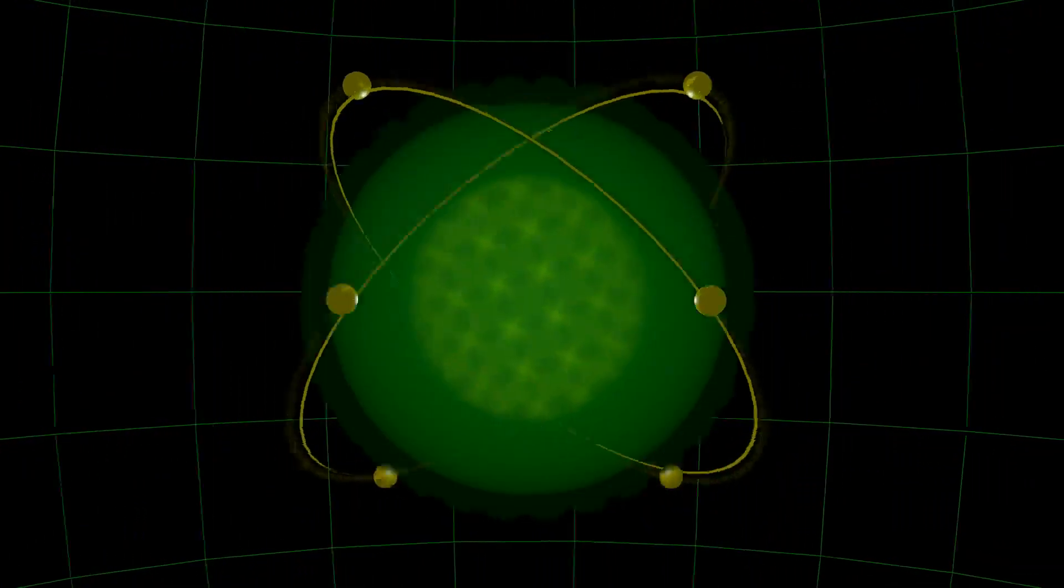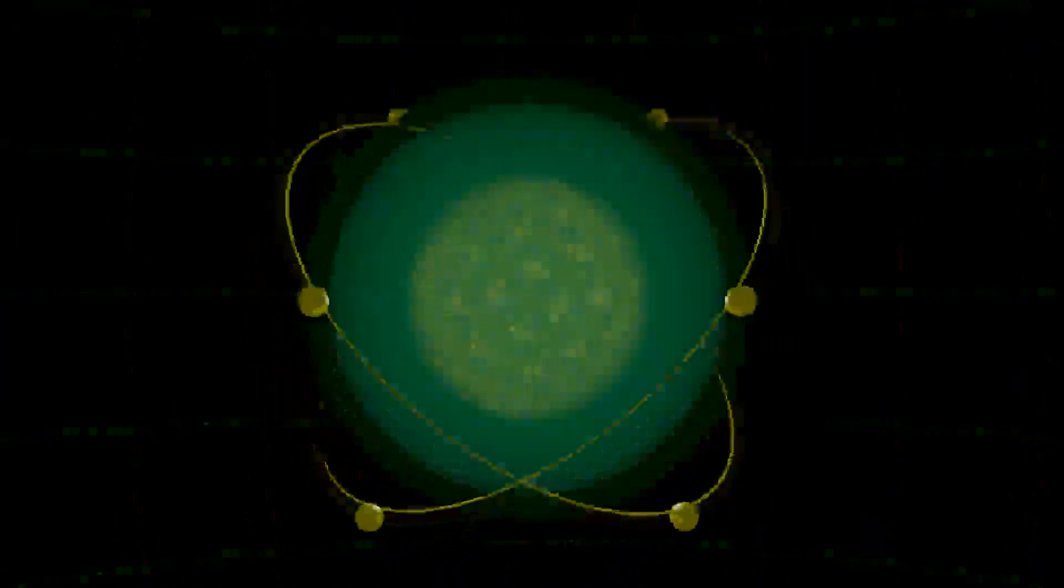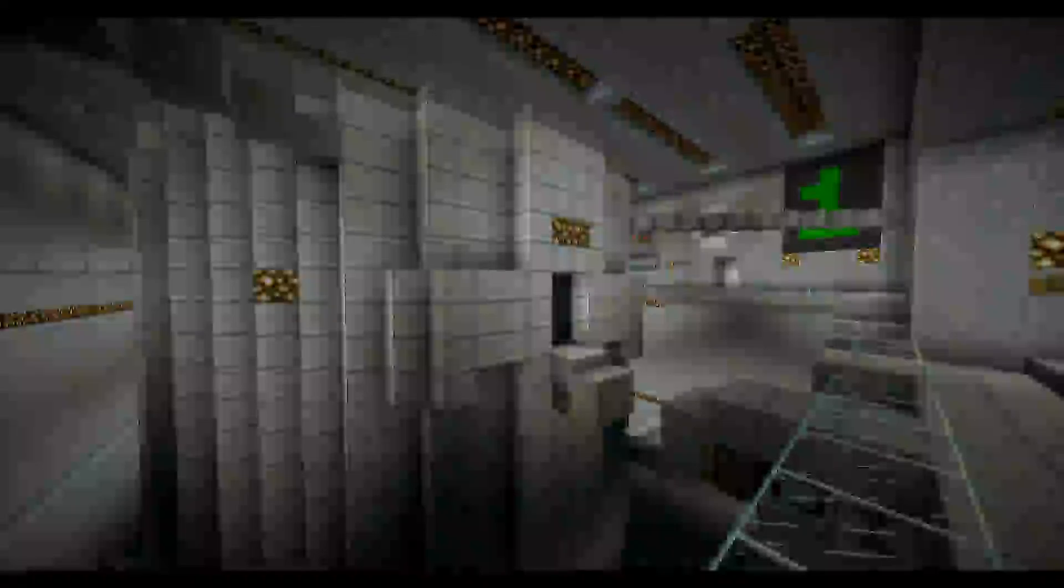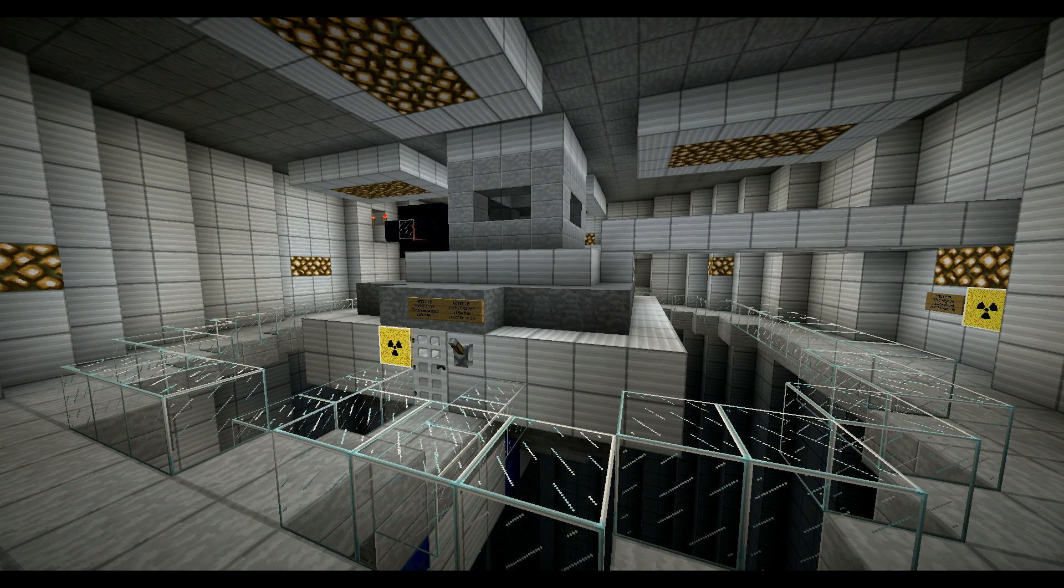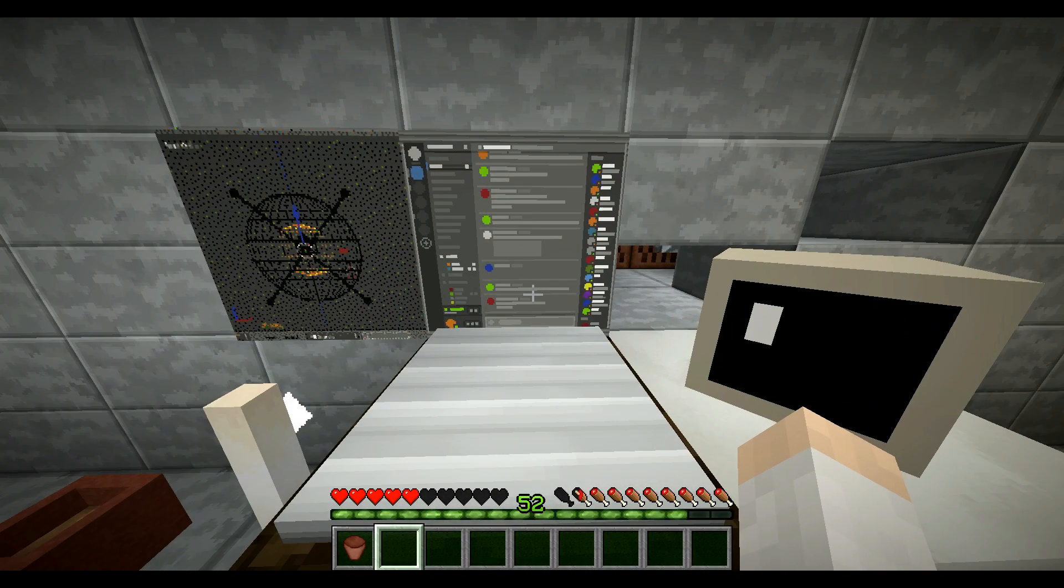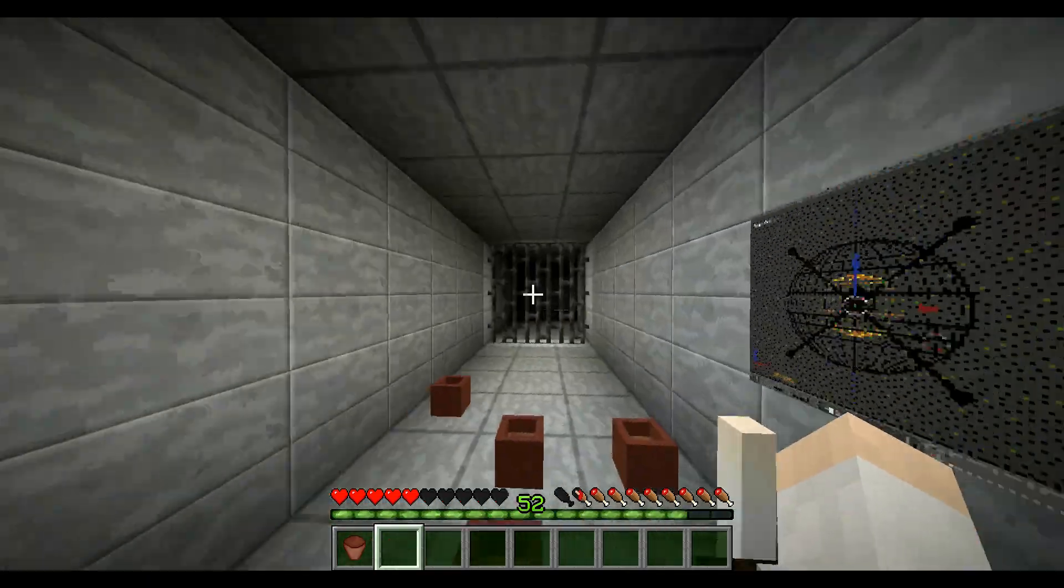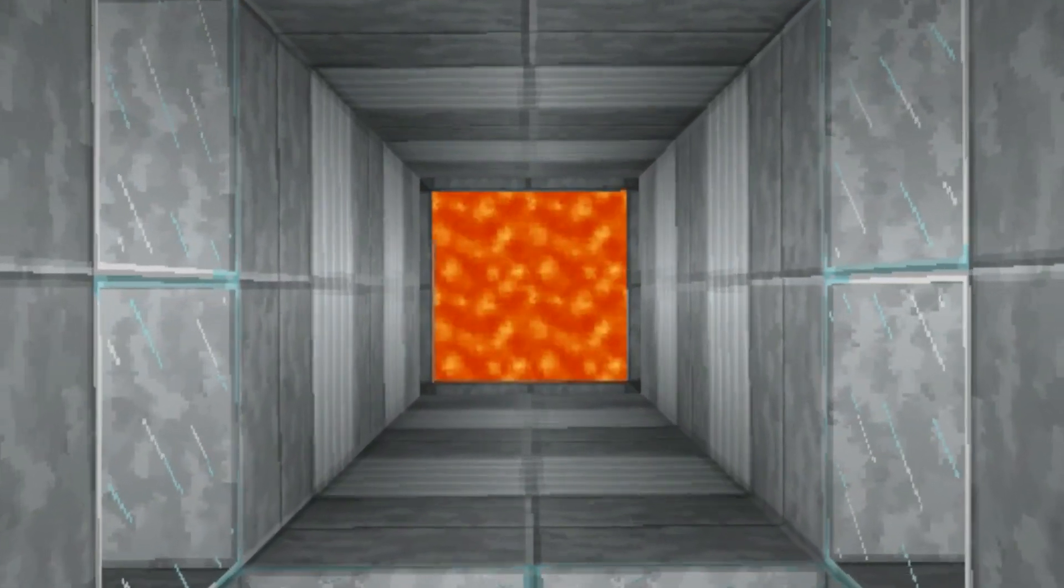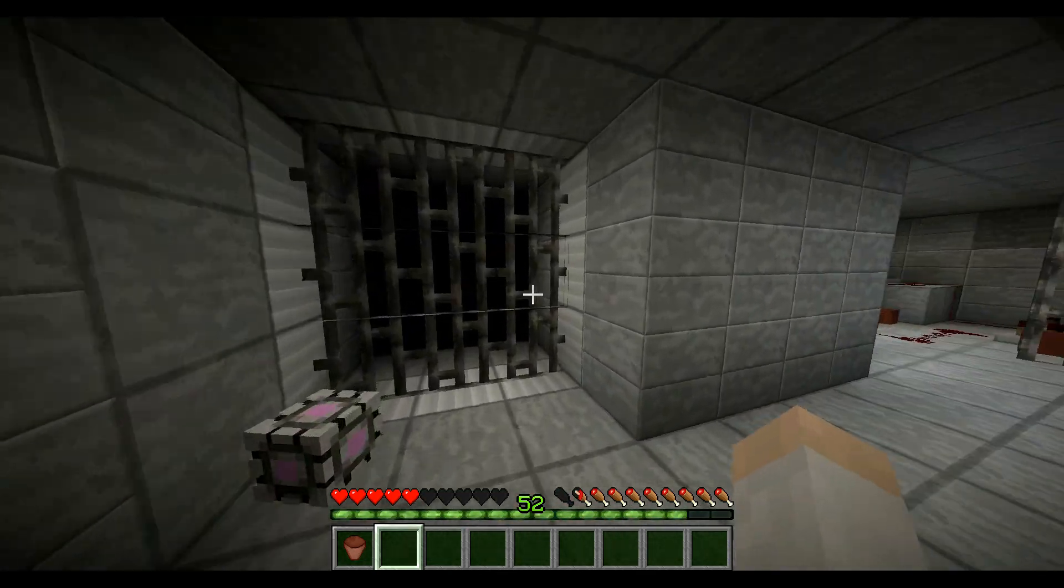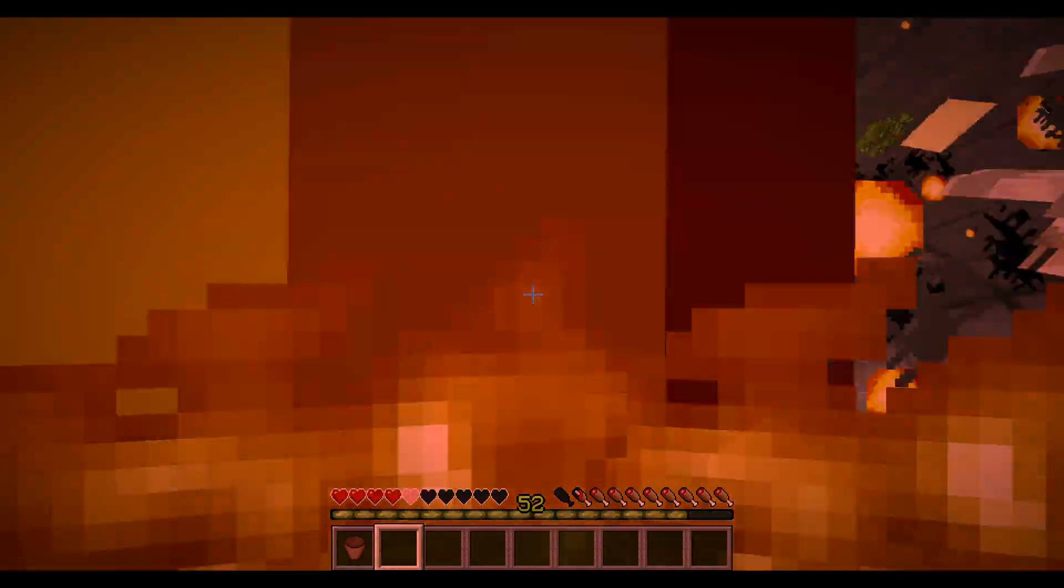Achtung! Nistende Ratten in Schacht 526 in Sektor C entdeckt. Präventive Maßnahme eingeleitet. Leite Fusionsreaktor Kernabzug um. Flammenwerfer los.